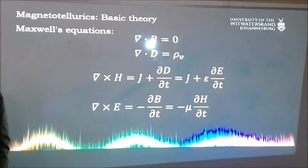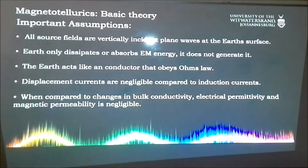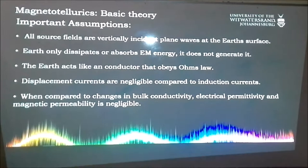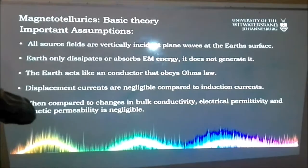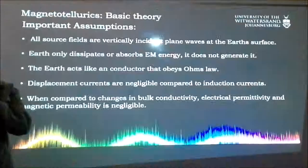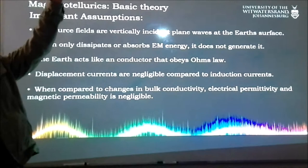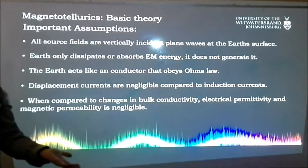Before we get into the maths, there are some very important assumptions we take into consideration when we model magnetic fields. All source fields are vertically incident plane waves at the Earth's surface. All the source energy is considered to be a plane wave and vertically incident. Because our sources are the ionosphere, which is 120 km up, they end up being plane waves when they reach the surface.